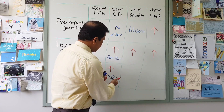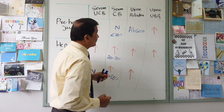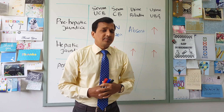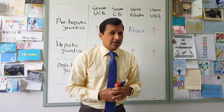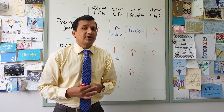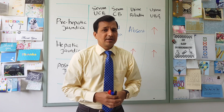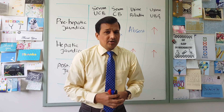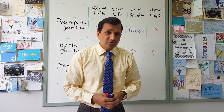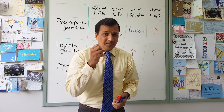Because conjugated bilirubin exceeds 50% and is water-soluble, there is elevation of urine bilirubin. If the obstruction is complete — such as complete obstruction of the common bile duct — conjugated bilirubin cannot reach the intestine, so it is not converted into urobilinogen. With no urobilinogen formed in the intestine, there is no urobilinogen entering enterohepatic circulation and none appearing in the urine. Both stool and urine are devoid of urobilinogen due to complete obstruction.